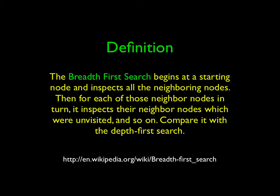A breadth-first search is a way of traversing a graph, beginning at some starting point — and for a breadth-first search, you have to have a starting point. If this was a tree, you'd start at a root node and work your way down, but really it can be any graph. You look at the neighbors connected to that node, then the neighbors' neighbors, and you work your way out, constructing in effect a series of shortest paths across the network.